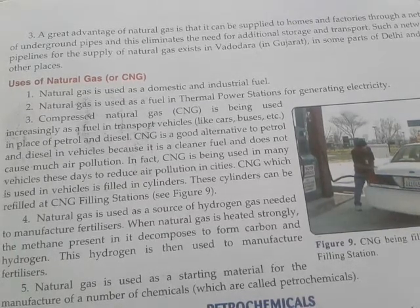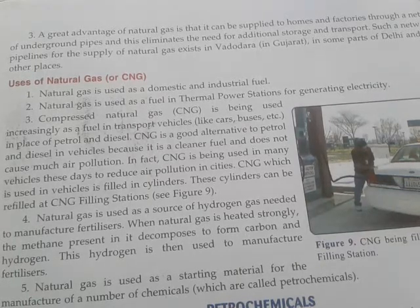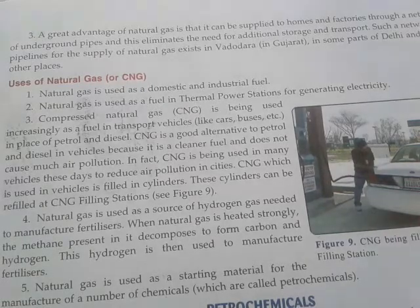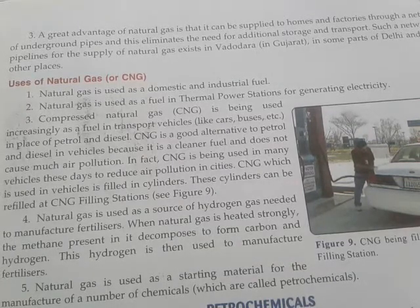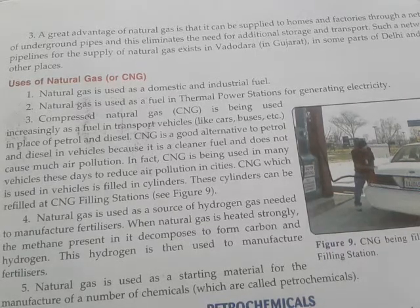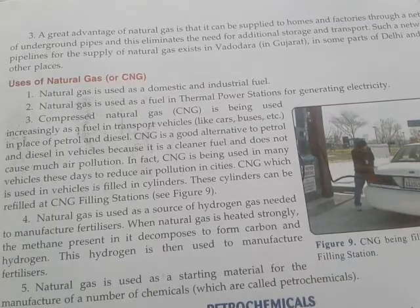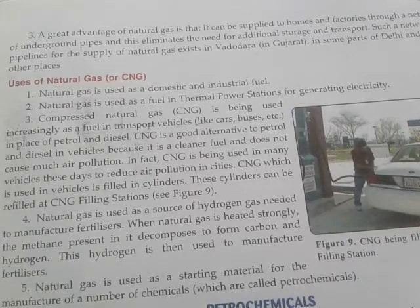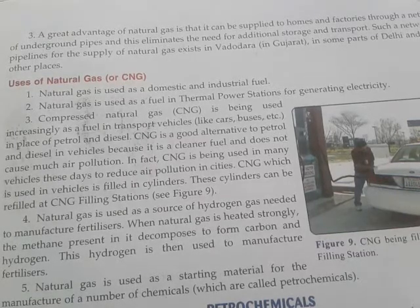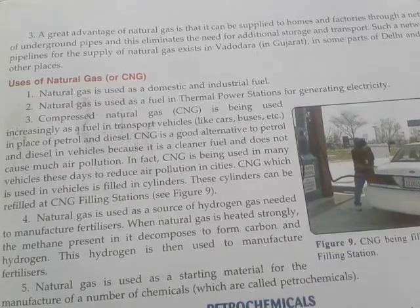In this video, we have studied about natural gas. It mainly consists of a hydrocarbon called methane, and other hydrocarbons — ethane and propane — are also present. It is prepared under the earth's crust by the decomposition of vegetable matter lying in water, in the absence of air, by the action of anaerobic bacteria, and it takes many years for its formation.